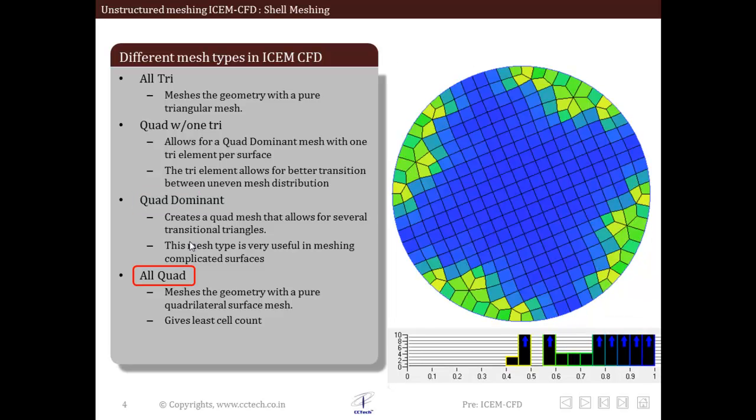The last type is all quad, which means the mesh consists of purely quadrilateral elements. There are no triangular elements. This gives the least cell count, but it is not always possible to cover the entire surface with such quad elements. We have to use a mixture of quad and tri.